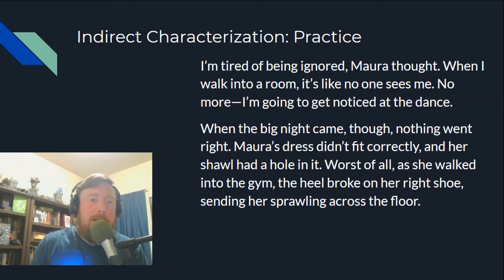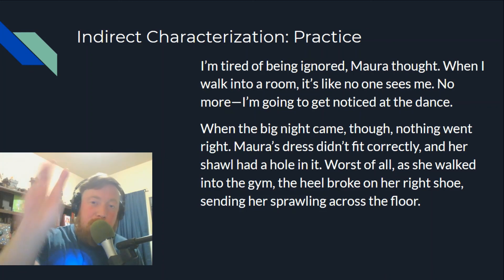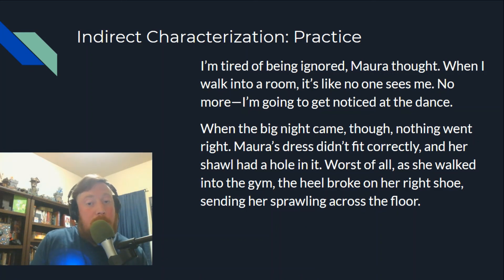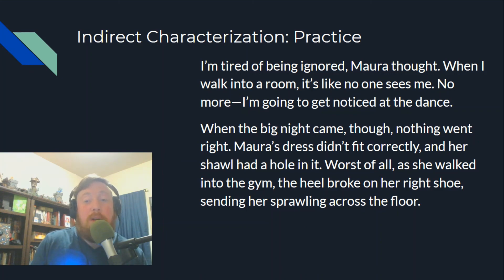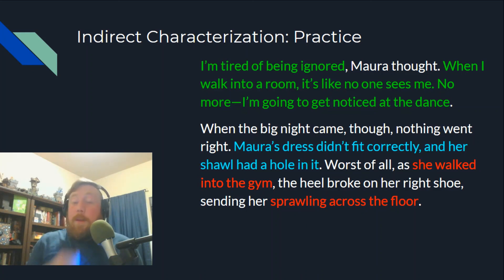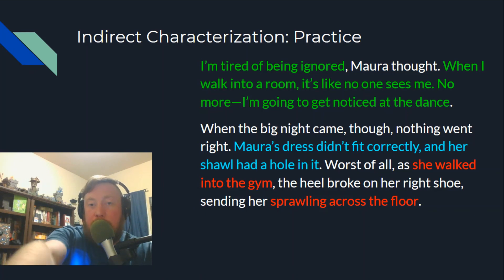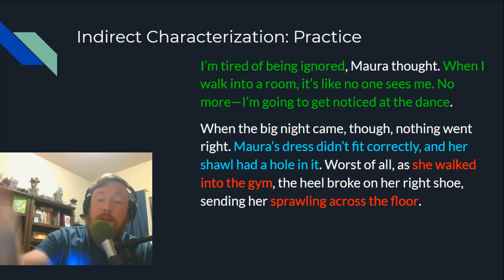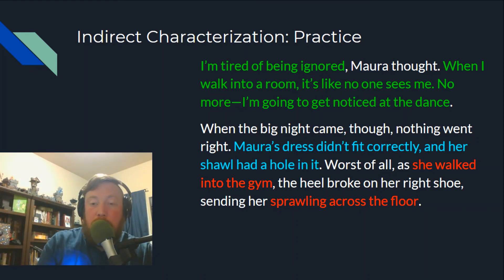Here's our last practice. There are three types of indirect characterization in this passage. 'I'm tired of being ignored, Mara thought. When I walk into a room, it's like no one sees me. No more — I'm going to get noticed at the dance. When the big night came, though, nothing went right. Mara's dress didn't fit correctly and her shawl had a hole in it. Worst of all, as she walked into the gym, the heel broke on her right shoe, sending her sprawling across the floor.' You can see her thoughts in the first part, then characterization through her appearance (the dress and shawl), and finally through action when she trips going into the gym.